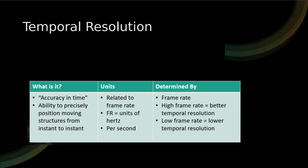The units for temporal resolution go back to hertz — we're talking about frames per second. This is directly related to our frame rate. Frame rate is how quickly we can produce frames, or how many frames we can produce in one second. The better our frame rate, the better our temporal resolution and the faster our system will work. A lower frame rate means worse temporal resolution.